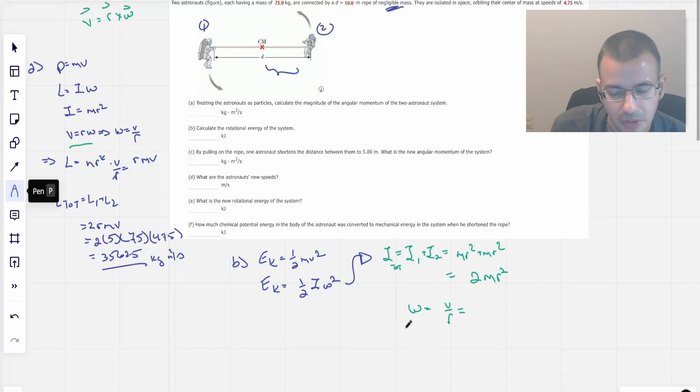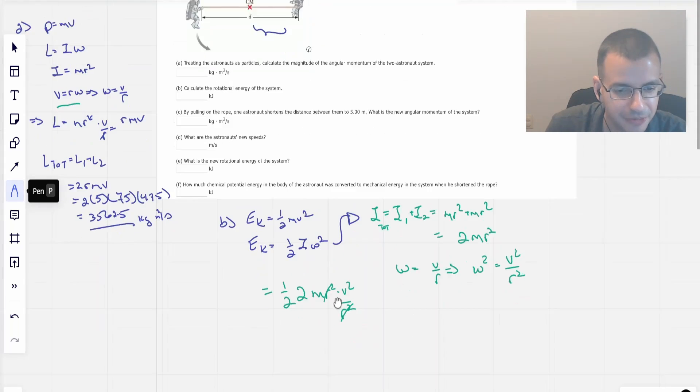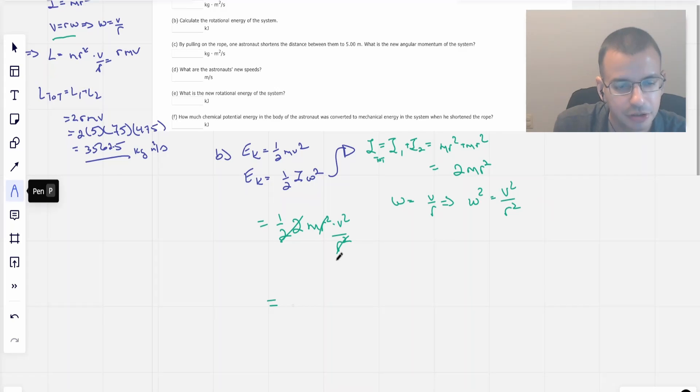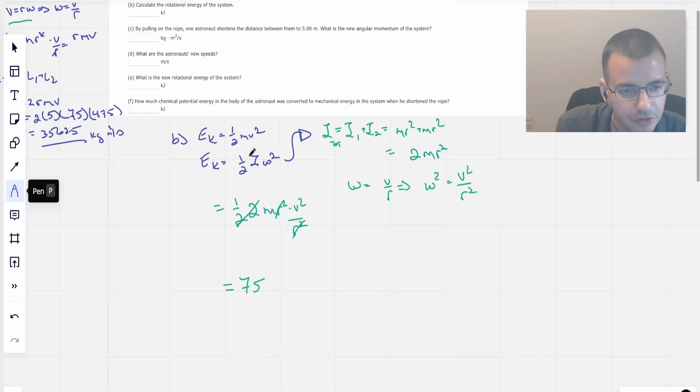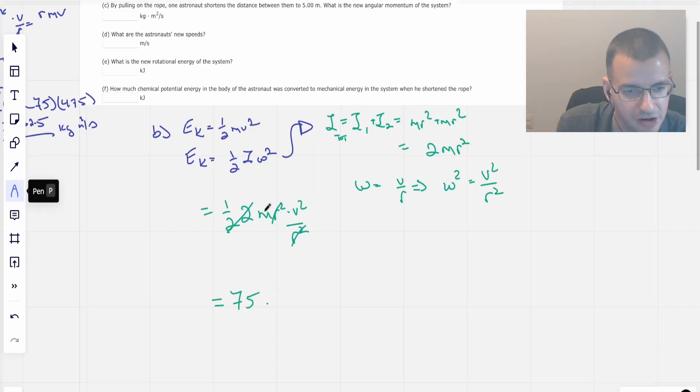And so then we take that, and omega squared equals v squared over r squared. So energy kinetic, I'm just going to get back to our original kinetic energy equation here. 2mr squared, v squared over r squared, cancel, cancel, and we are left with the mass of the astronaut, which is 75, times their velocity squared, which is 4.75 squared. And then the one-half dropped away because we have two astronauts.